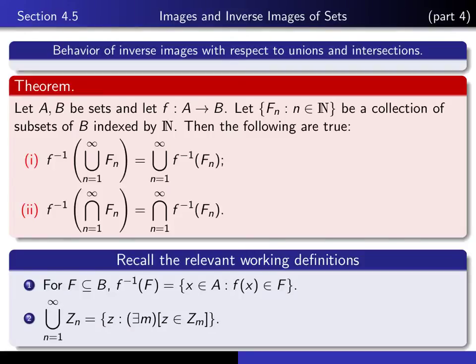If you take the union of sets Z_n as n runs from 1 to infinity, the working definition is the set of all z such that there exists an index m — one of those n's — such that z is an element of that particular set Z_m.